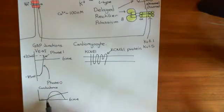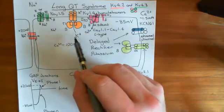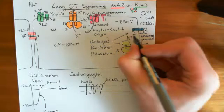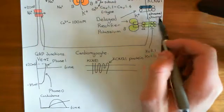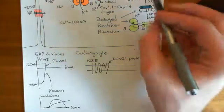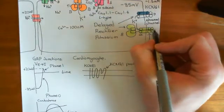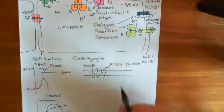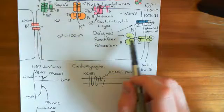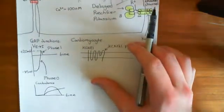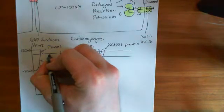At the same time, the three types of delayed rectifier potassium channels are starting to open. Potassium is much higher inside the cell than outside, and with a neutral electrical potential difference, the concentration gradient takes over — potassium moves out through the KCNQ1 channel and the KV11.1 or KV1.5 homotetramers, constituting a movement of positive charge out of the cell. Initially, the inward calcium current and the outward potassium current completely balance each other.